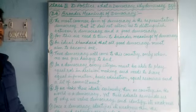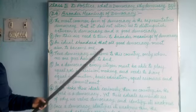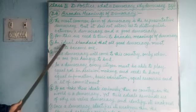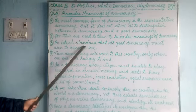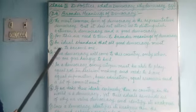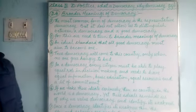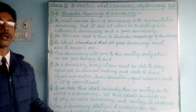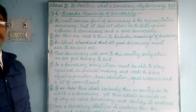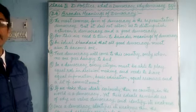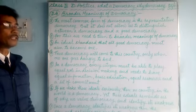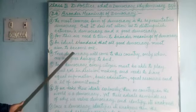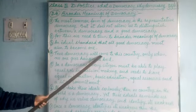To understand a good democracy, we need to turn to the broader meaning of democracy. What is the meaning of a good democracy? It is the ideal standard — the good standard — that all good democracies must aim to become. Democratic countries all over the world must try to become a good democracy, and for that reason they must always try to become one of the best democracies.